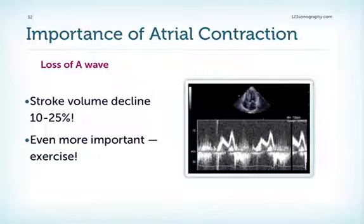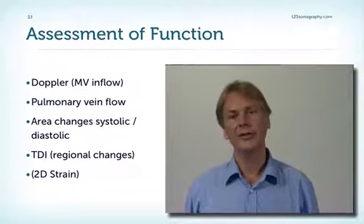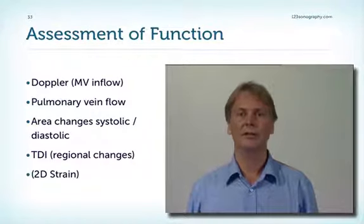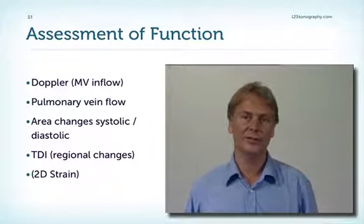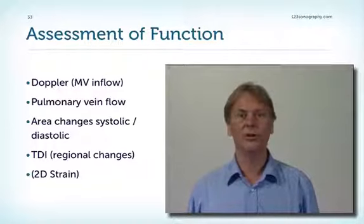It is very important to emphasize that atrial contraction is critical for cardiac function. Loss of sinus rhythm and the A wave reduces stroke volume by 10 to 25 percent. This reduction is even more important in patients who have a filling problem such as aortic stenosis or hypertension, and also during exercise. Assessing left atrial function is difficult; the best method is probably the Doppler signal across the mitral valve looking at the E and A waves — this will be discussed in detail when covering diastolic function. The pulmonic vein can also be used, but has limitations and is difficult to perform routinely.